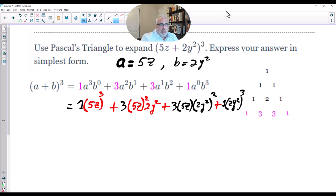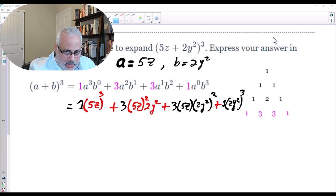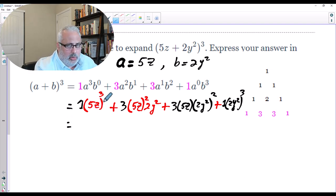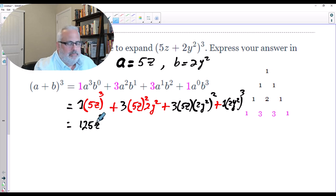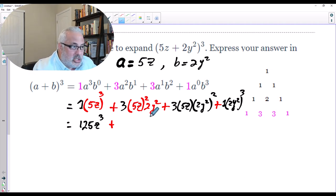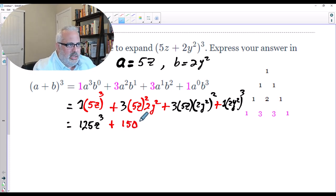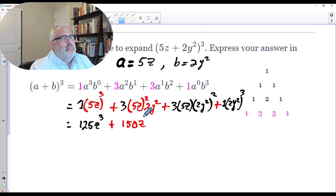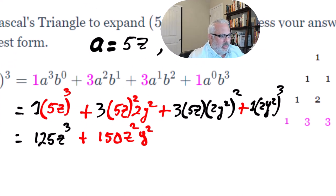Let's grab a calculator and start working. We are going to multiply 5Z to the power of 3, which is 5 times 5 times 5, giving us 125Z to the power of 3. Plus — we raise 5Z to the power of 2, which is 5Z times 5Z = 25, then multiply 25 times 3 to get 75, then multiply 75 times 2 to get 150. So we have 150Z squared.